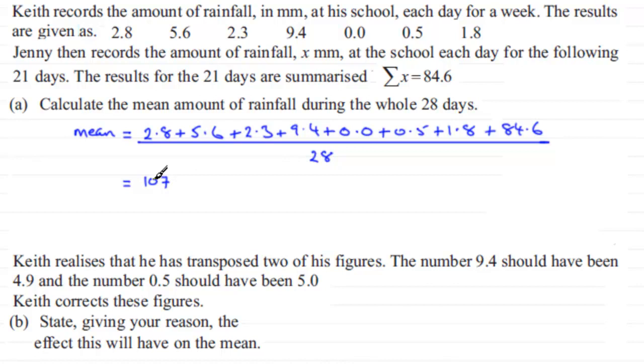And if you work that out, what you find that you get is a total of 107 millimeters which fell in 28 days, so if we do that division it turns out to be 3.8214 and so on, which when rounded then to three significant figures is going to be 3.82 millimeters, to three significant figures.